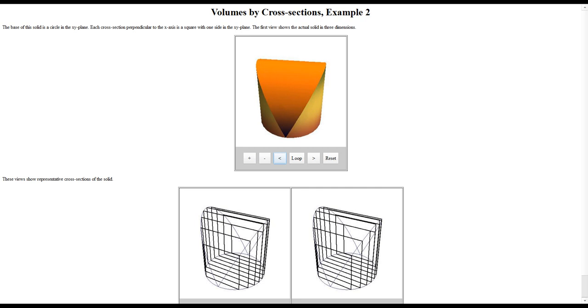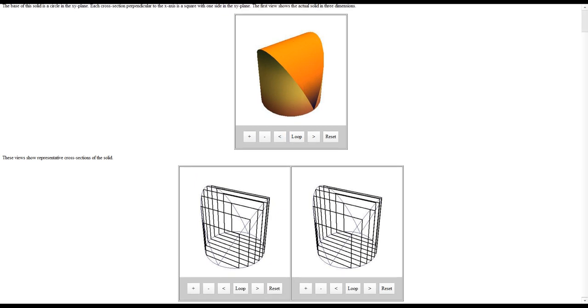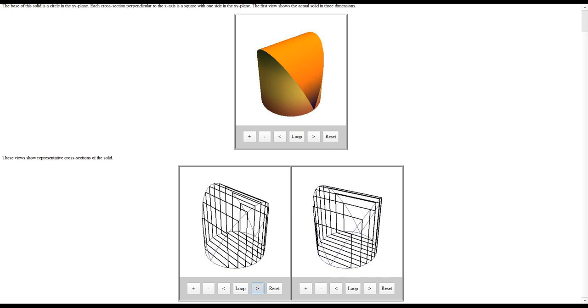The link to this website you can find in the description of this video if you want to play around with it yourself. And so what you see here is this solid, where the bottom of the solid is a circle. But we've stacked these squares on top of it, so look at the bottom left right here to kind of see the skeleton of this object. And so as you spin this around, you can see the circle that's on the bottom. We're rotating around the center of that circle, and there's all these different squares that are placed on the base of the circle.